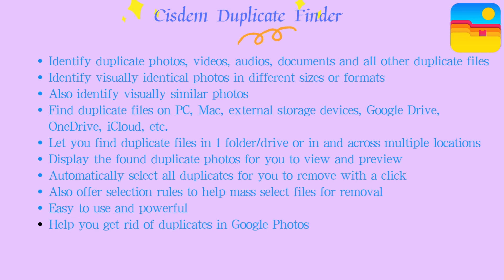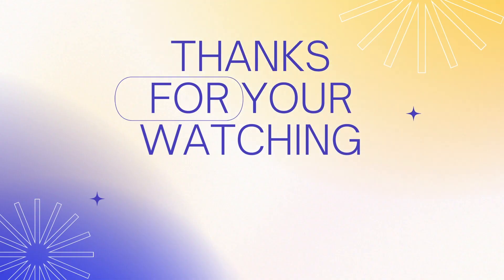System Duplicate Finder identifies duplicate photos, videos, audios, documents, and all other duplicate files on your Mac and PC, and provides convenient selection rules to help you mass-select duplicates to remove. It works on your computer, external storage devices, Google Drive, OneDrive, iCloud, etc. You can download it below the video. Thanks for watching.